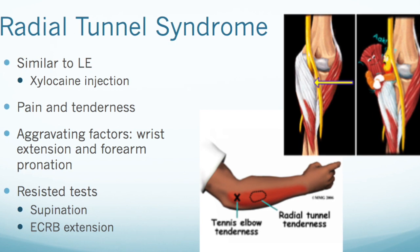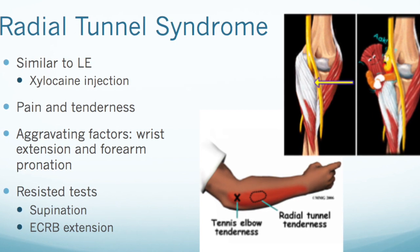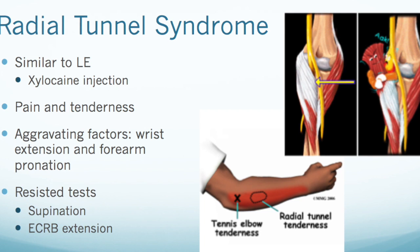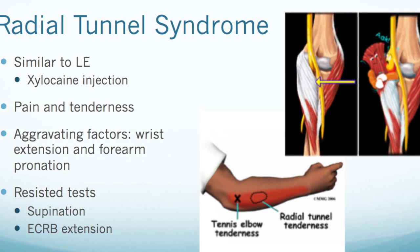Some aggravating factors for these patients would be wrist extension and forearm pronation. A good resisted test to do would be supination or extensor carpi radialis brevis extension.